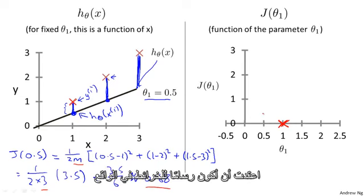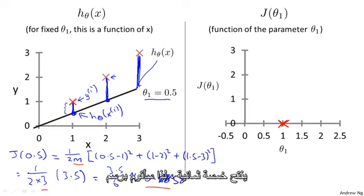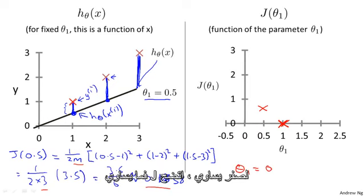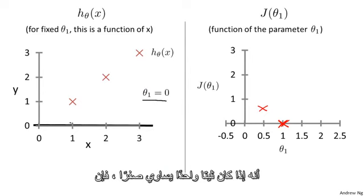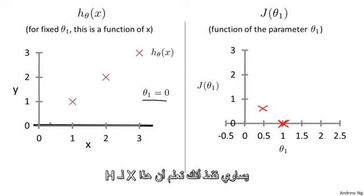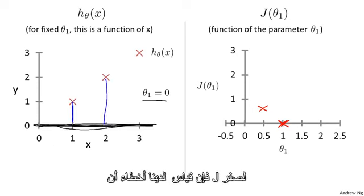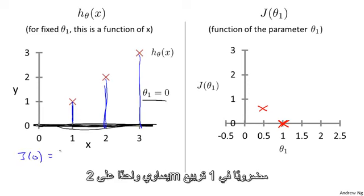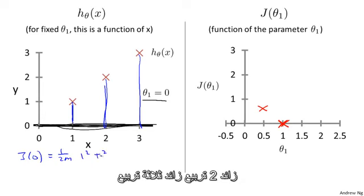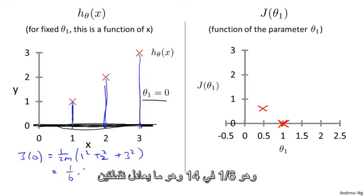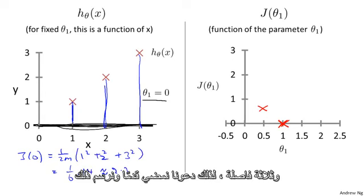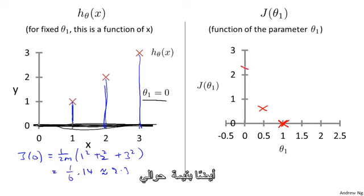So J(0.5) is about 0.58. Let's plot that — it's about over there. Now let's do one more. How about if theta one is equal to 0? What is J(0) equal to? If theta one is equal to 0, then h of x is just equal to this flat horizontal line. Measuring the errors, we have J(0) equals 1 over 2m times (1 squared plus 2 squared plus 3 squared), which is 1/6 times 14, which is about 2.3. Let's go ahead and plot that as well — you end up with a value around 2.3.